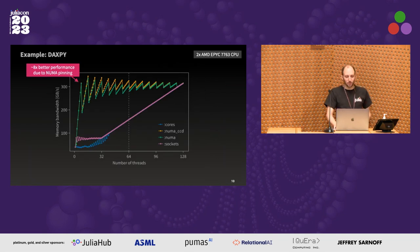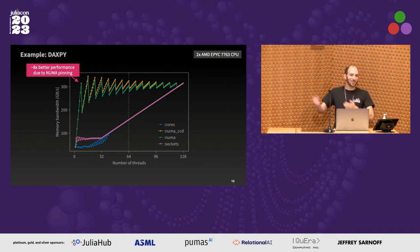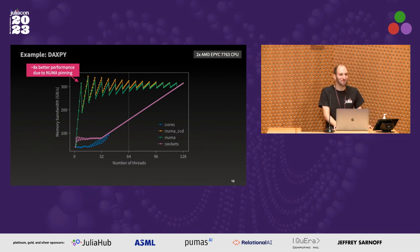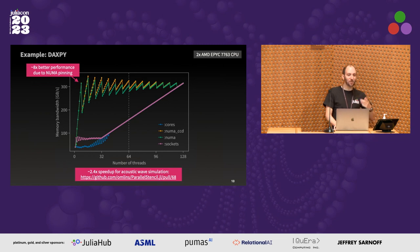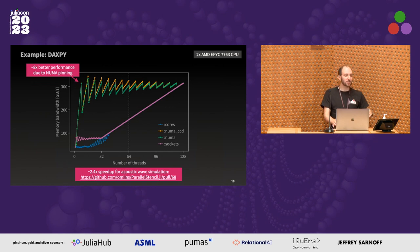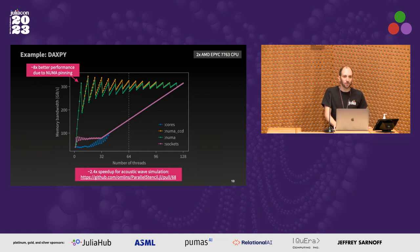If you do it right, you can get great speed-ups. I don't promise anything, but sometimes you get eight times performance improvements if you have the right number of threads and all other conditions. In parallel stencil, I made a PR — that's the work connecting to what Ludovic was talking about earlier. I took one of their examples, like acoustic wave simulation, pinned the threads, and got a 2.4 times speed-up just by making sure everything is pinned correctly.